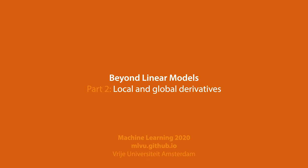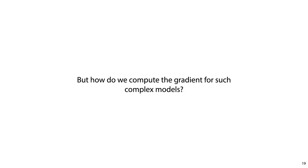In the previous video, we looked at what neural networks are, and we discussed how to compute a forward pass. That is, given the input to the model, how do we produce the output — the model's prediction. And we ended on this question: how do we work out the gradient for such a complicated model?